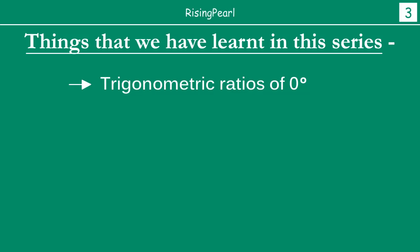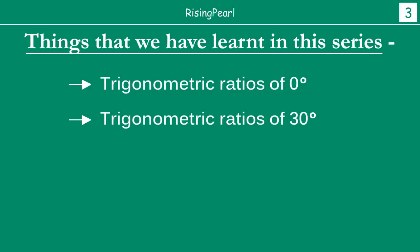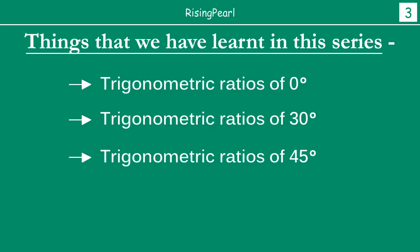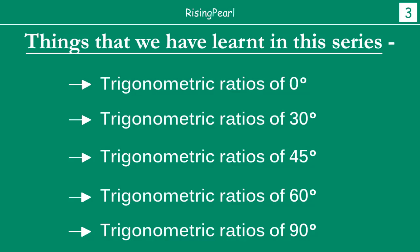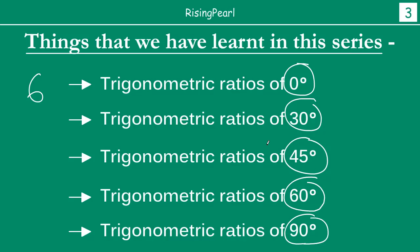Then we looked at trigonometric ratios of some specific angles, sometimes also known as standard angles — trigonometric ratios for 0 degrees, 30 degrees, 45 degrees, 60 degrees, and 90 degrees. There are 6 trigonometric ratios, and for each of these standard angles, the 6 trigonometric ratios are something that you want to learn, remember, and memorize, just the way you know your tables from 2 through 20. Because this is going to be very, very useful going forward.